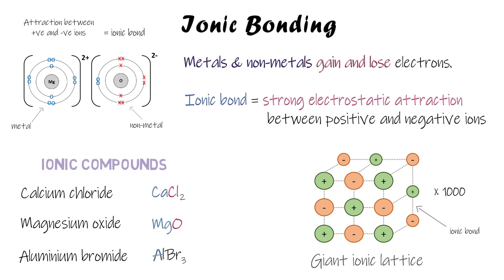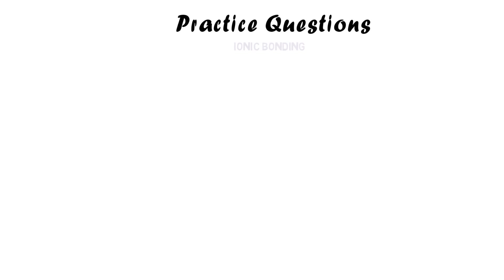In aluminium bromide, aluminium is a metal and bromine is a non-metal. So in each case we've got both a metal and a non-metal element present — at least one of each. You could have more than one of each; it will not be ionic bonding unless you've got both a metal and a non-metal present.